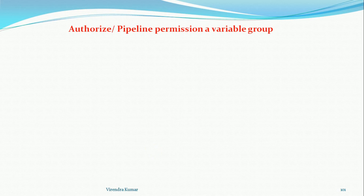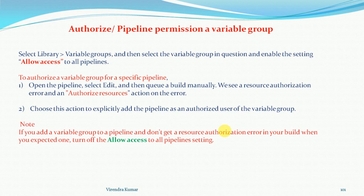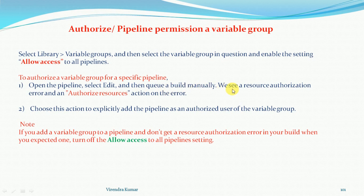Let's see how to authorize and provide permissions to a variable group, because unless you provide permissions you cannot use the variable group in particular pipelines. The steps are: select the Library, go to the variable group, select the variable group in question, and enable the setting 'Allow access to all pipelines'. To authorize the variable group for specific pipelines, open the pipeline, select the Edit button, then queue a build manually. You will see a resource authorization error, and you can choose the action to explicitly authorize the variable group.